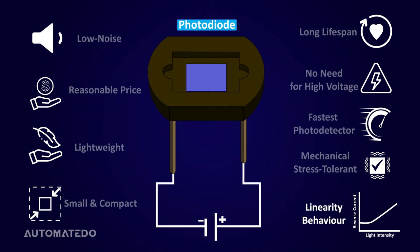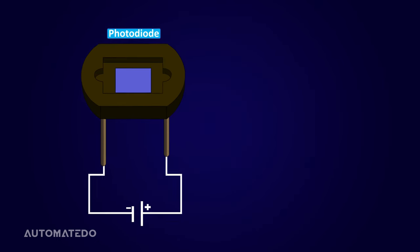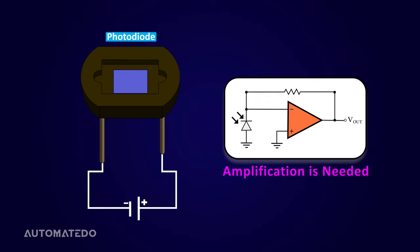The main disadvantages of using photodiode are the need for external biasing, with a rise in temperature the dark current increases, the active area is small, and amplification is needed since the output is low.